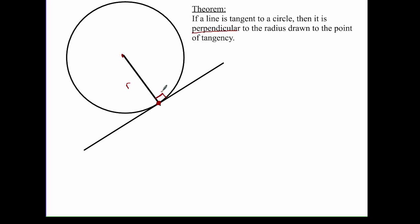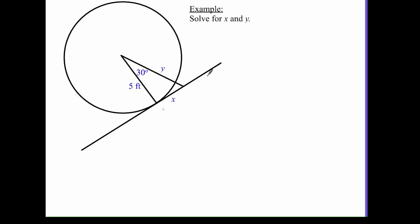There are other proofs you can do by contradiction and you can look those up online, but for now we'll say this is true because it truly is the shortest distance. Going on to some examples — if I were to solve for x and y here, I already know that this is a right triangle and I could set this up using some trigonometry.